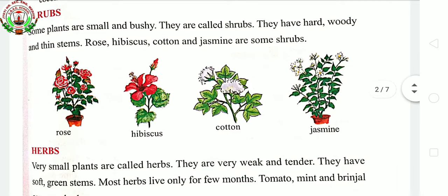Next, shrubs. The small and bushy plants are called shrubs. They have hard, woody and thin stems. Examples can be rose, hibiscus, cotton, jasmine and tulsi.